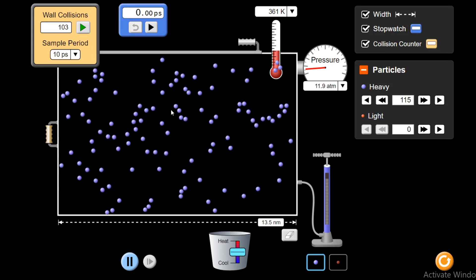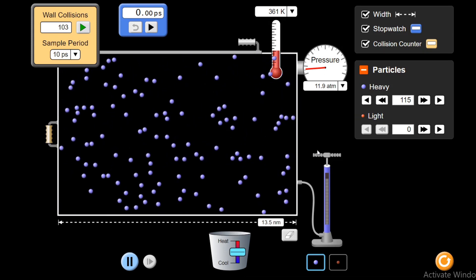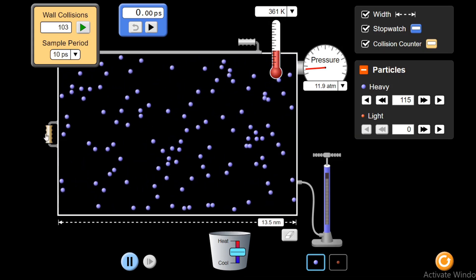So we can change pressure by three methods. By changing the temperature, by changing the number of molecules or number of particles in the container, or by changing the volume.